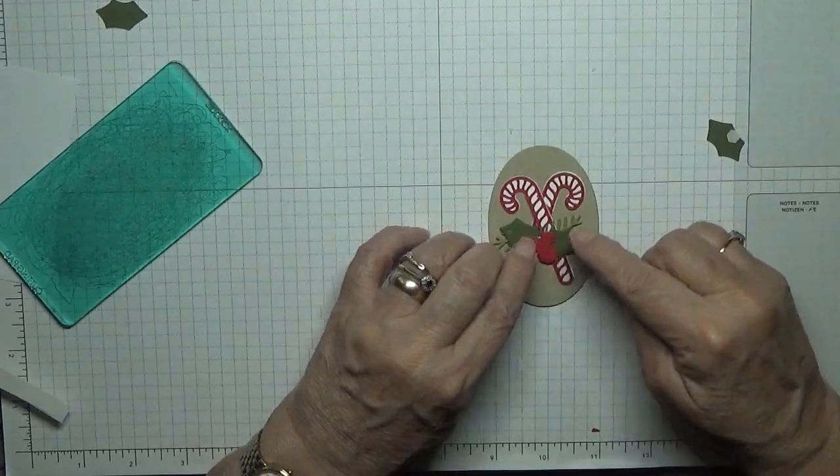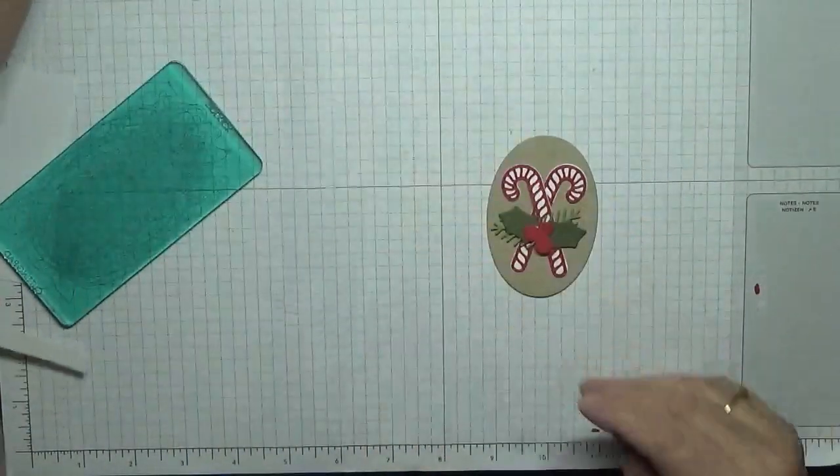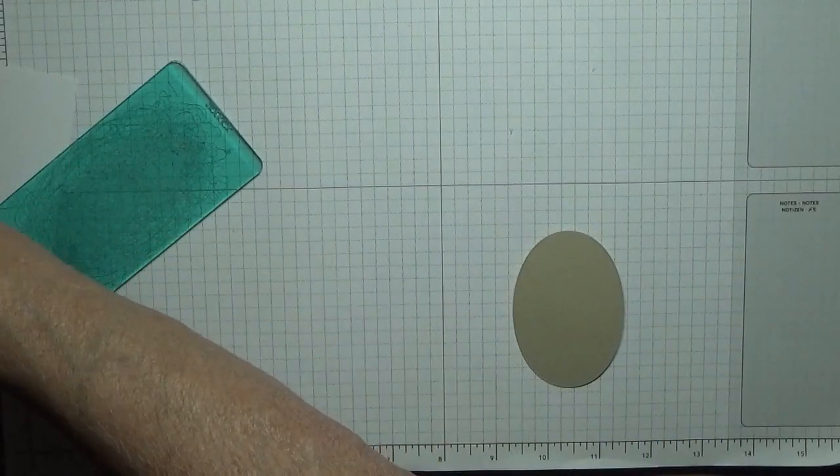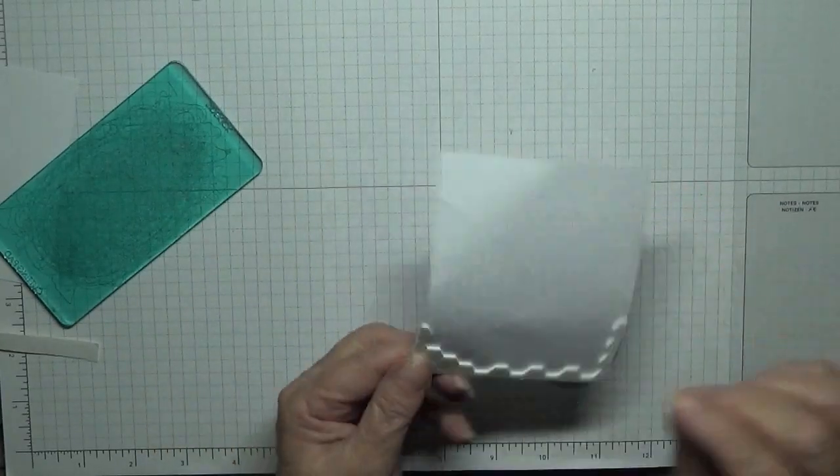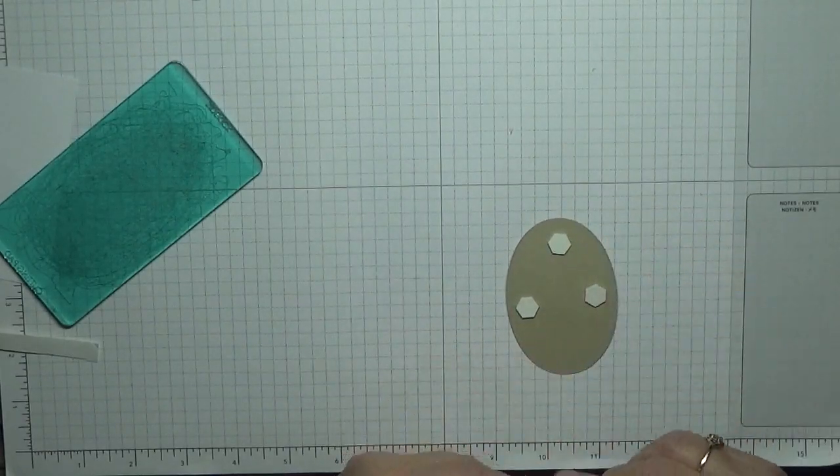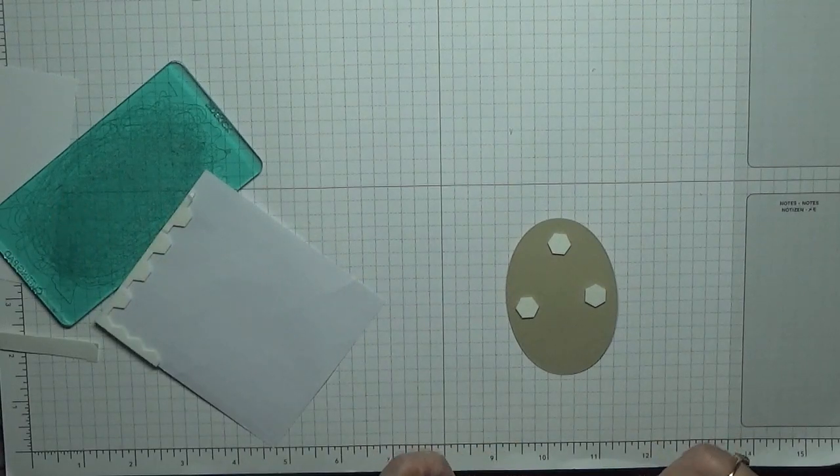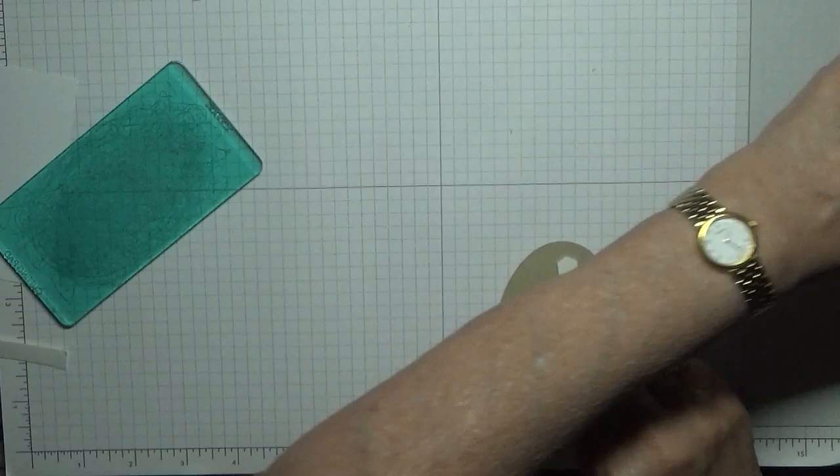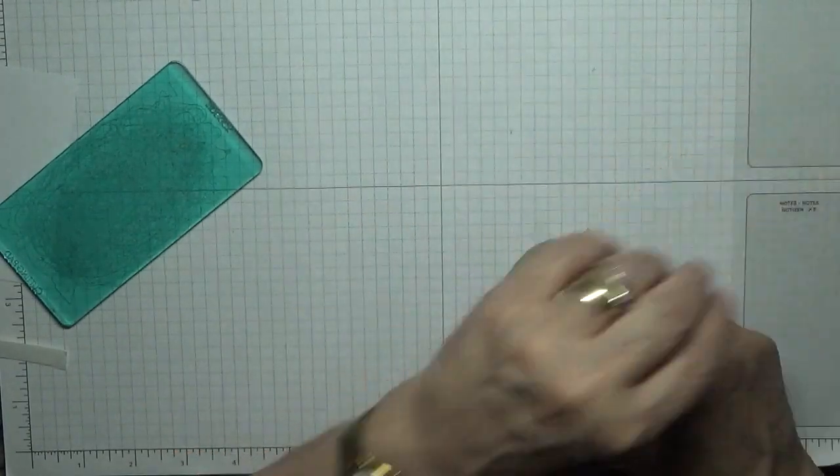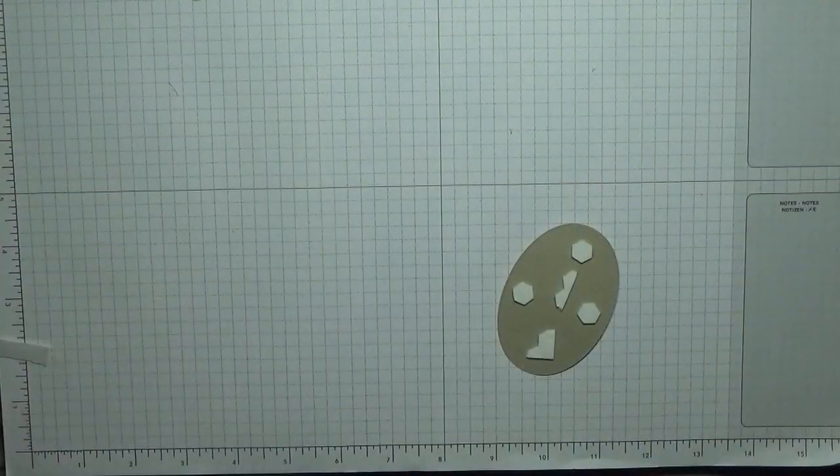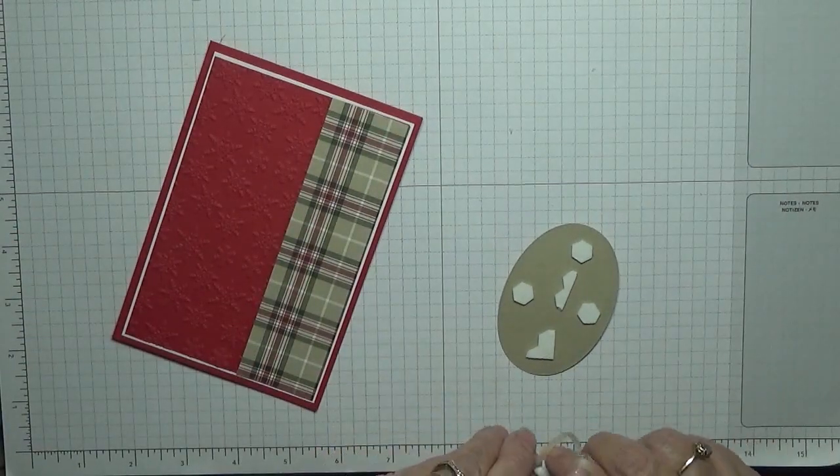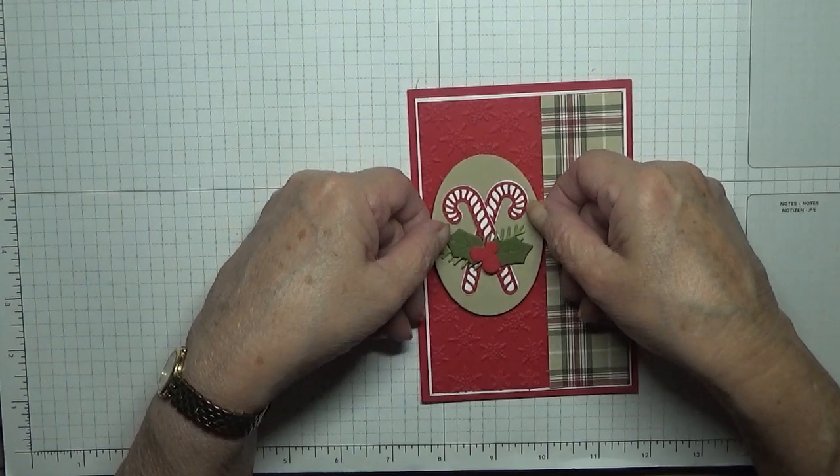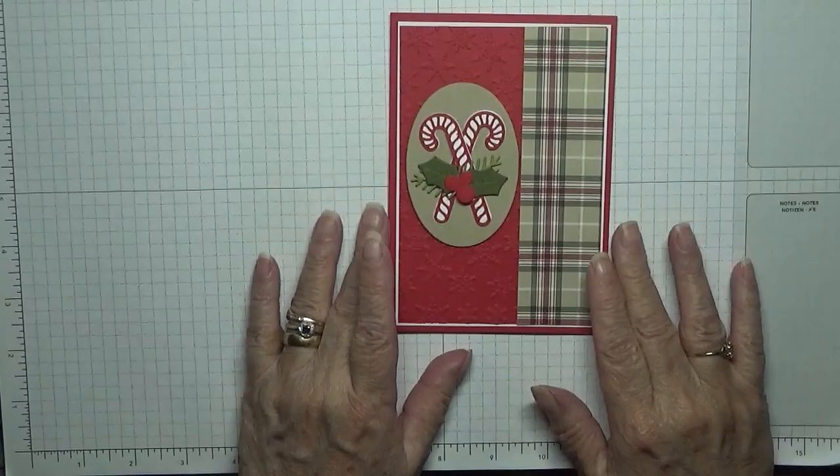When I attach these I use a mini dimensional at the top, some glue at the bottom and stick that over the crossover like that. And then I add the mini berries on the top and then we stick all this on dimensionals.